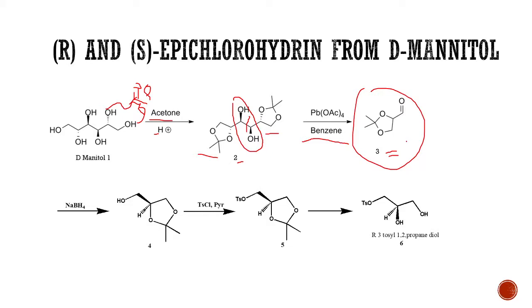This aldehyde carbonyl, or the CHO aldehyde carbonyl, is reduced with the help of NaBH4 to get compound number 4. Compound number 4 is a primary alcohol having this part as it is present in number 3.